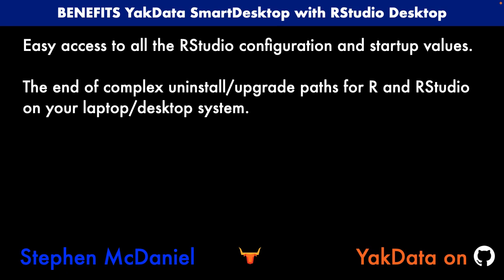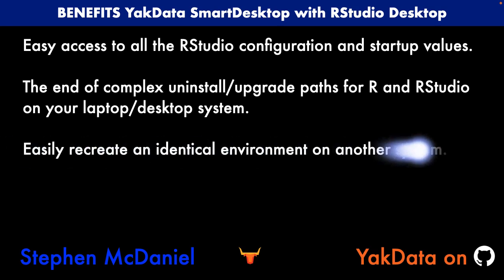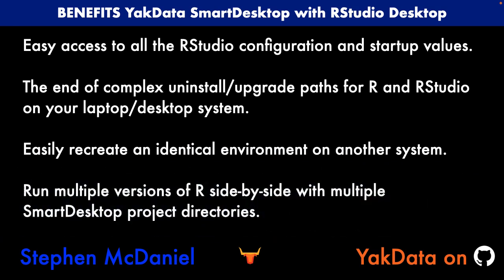You could literally have R 4.1.2 and then when 4.1.3 is released you could easily work with that, all coexisting happily in your system thanks to Docker. You can easily recreate an identical environment on another system, running multiple versions of R side-by-side. And if you back up that one parent directory and all subdirectories and ship it to someone via Dropbox or Google Drive, they'll get the exact same environment you had.